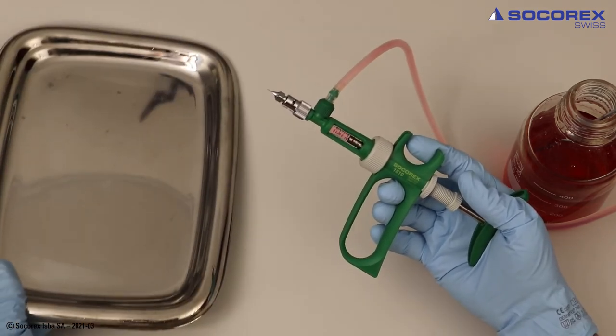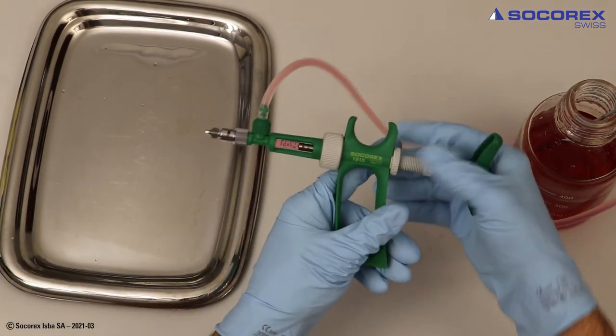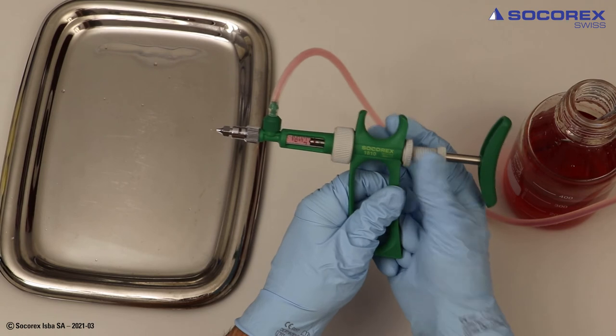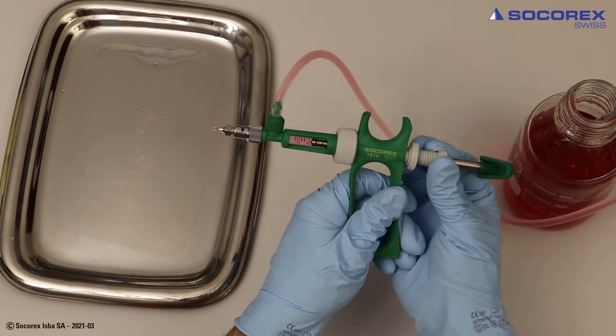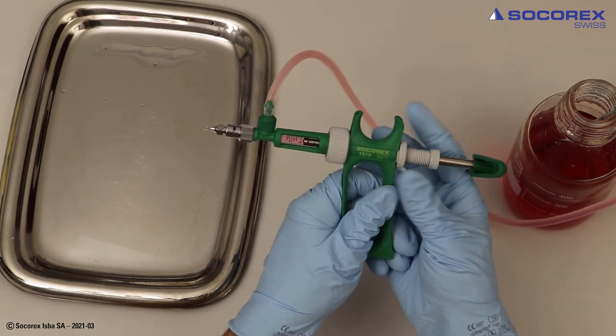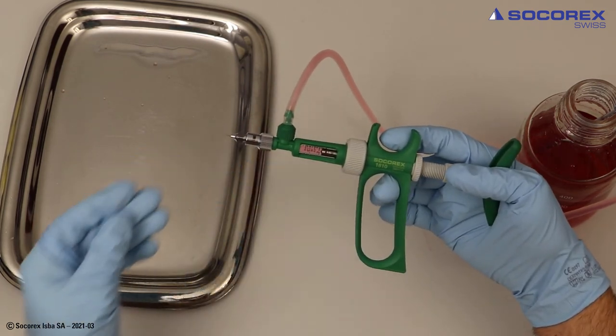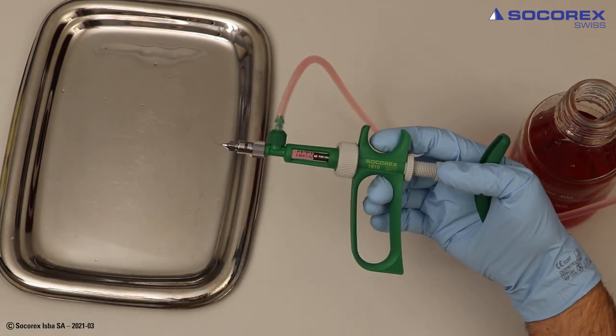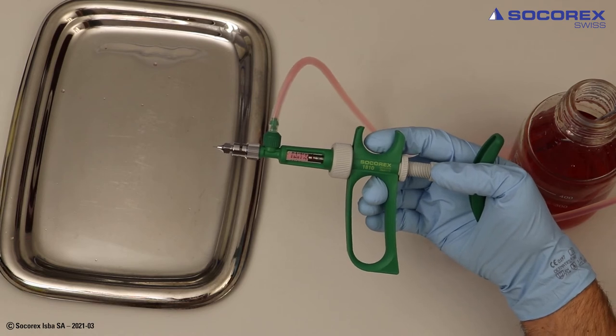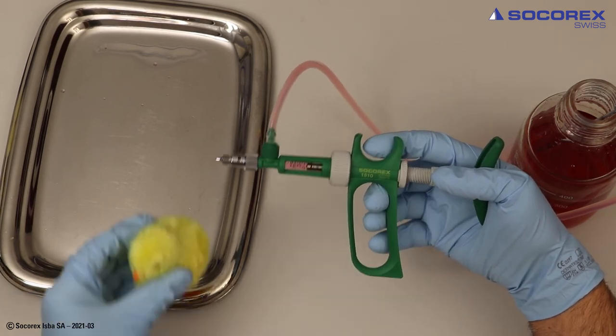Adjust volume after untightening locking nut and moving plunger up or down until wanted injection volume faces the red o-ring or the edge of the plunger on the 0.5 ml model. We are ready for injection.